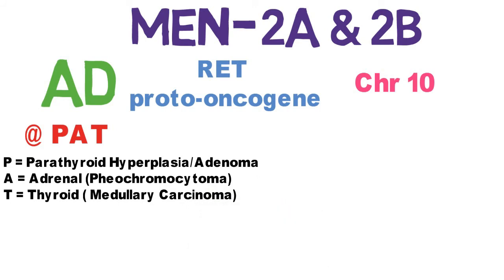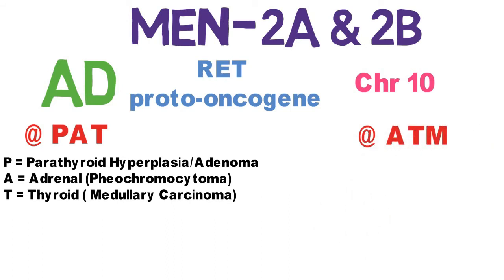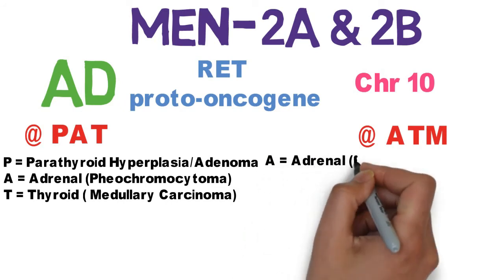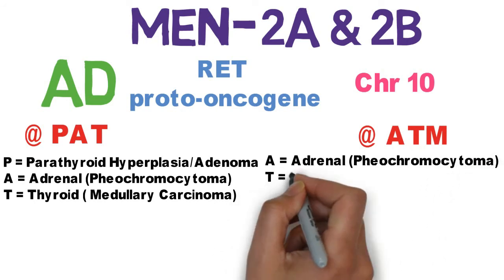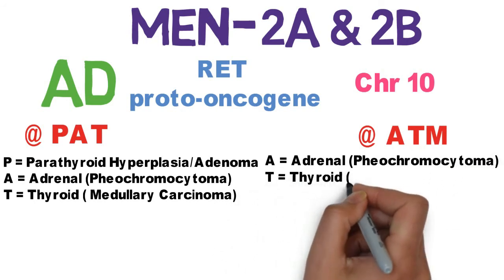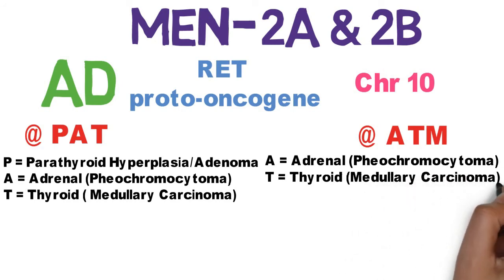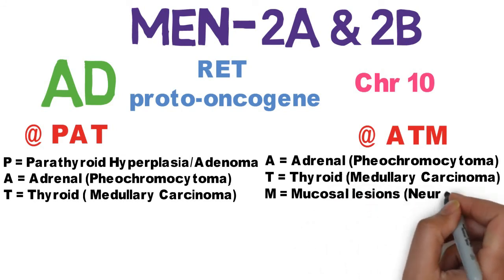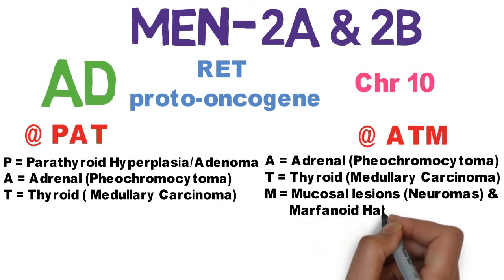The mnemonic for MEN 2b is ATM: A is for adrenal involvement in the form of pheochromocytoma, T is for thyroid involvement in the form of medullary carcinoma of the thyroid, and M is for mucosal lesions — that is, neuromas — and also for the marfanoid habitus.